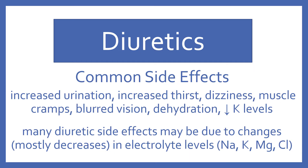Common side effects of diuretics include increased urination, increased thirst, dizziness, muscle cramps, blurred vision, dehydration, and decreased potassium levels. Many diuretic side effects may be due to changes — mostly decreases — in electrolyte levels. This includes sodium, potassium, magnesium, and chloride.